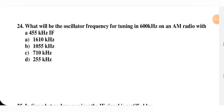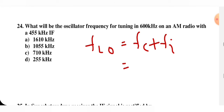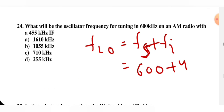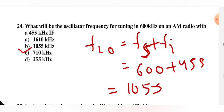Next question: what will be the oscillator frequency for tuning in to 600 kHz on an AM radio with a 455 kHz IF? The local oscillator frequency formula is: f_lo = f_s + f_i = 600 + 455 = 1055 kHz. So B is the right answer. You should know this formula and also the image frequency formula.